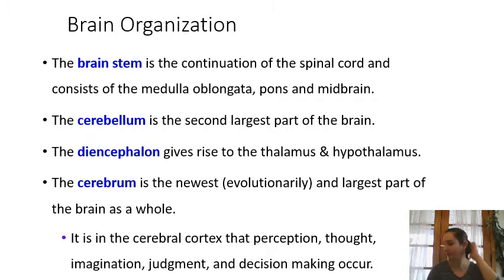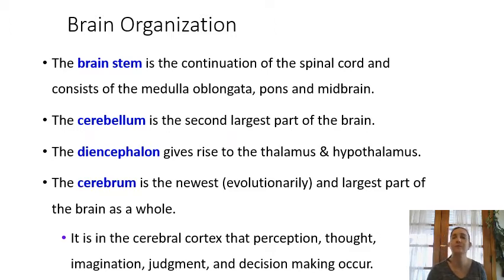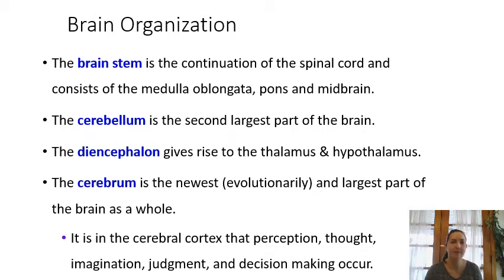Next we have the cerebellum, which is towards the back of your head. The cerebellum is the second largest part of the brain and controls movement and coordination. The diencephalon is the deep inner portion of the brain, which we can subdivide into the thalamus and the hypothalamus. And then the cerebrum — the largest part of the brain, evolutionarily the newest, and most important for higher level complex thinking.